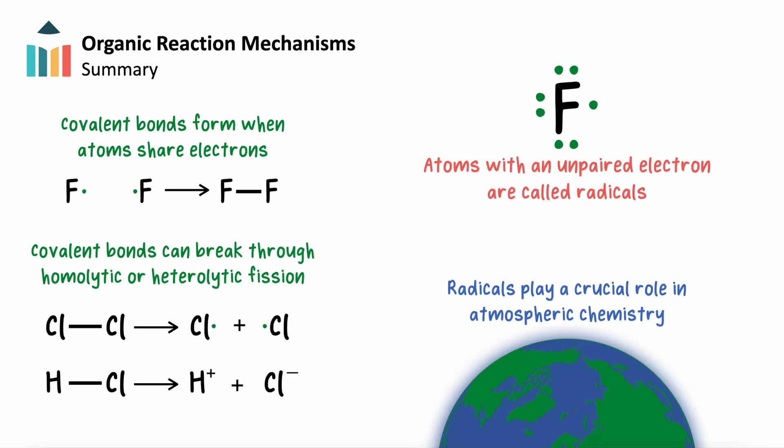In summary, we've uncovered the fundamental principles of covalent bond formation and breaking, largely in the context of the production of radicals and their various uses. We learned that covalent bonds are formed when atoms share electrons, and these bonds can break through processes like homolytic fission or heterolytic fission.